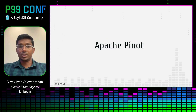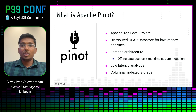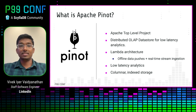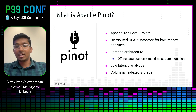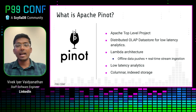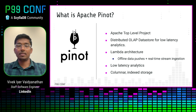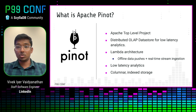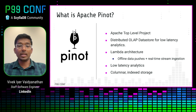Let's start off with briefly introducing Apache Pinot. Pinot is a top-level Apache project. It is a distributed real-time analytics data store designed to deliver low latency analytics at scale. It follows a Lambda architecture to ingest data, supporting both offline batch data pushes as well as real-time stream ingestion sources like Kafka, Pulsar, Kinesis, etc. It's a columnar data store with rich indexing support, well-suited for serving low-latency analytical queries.